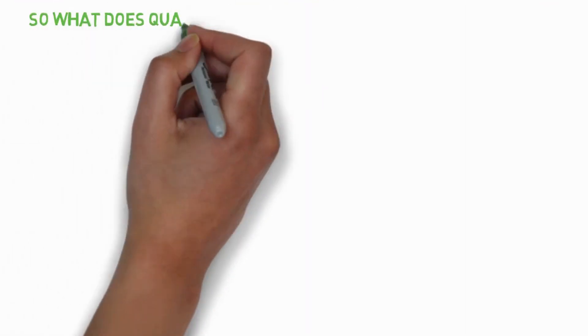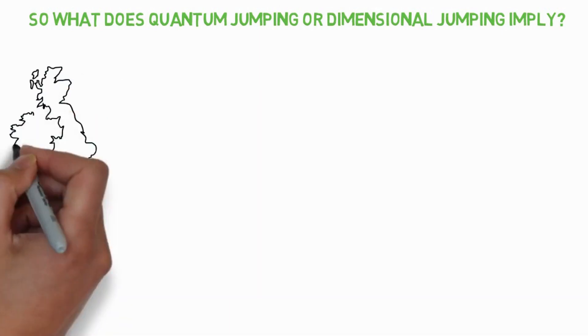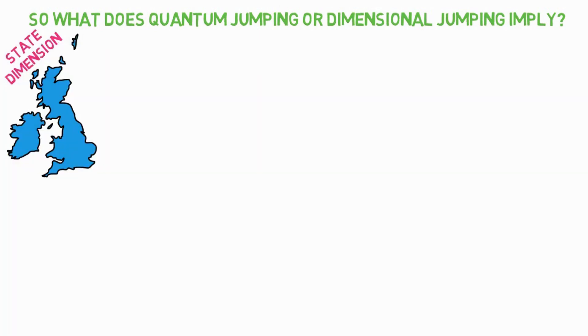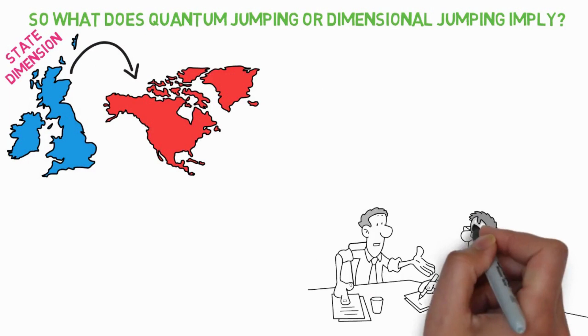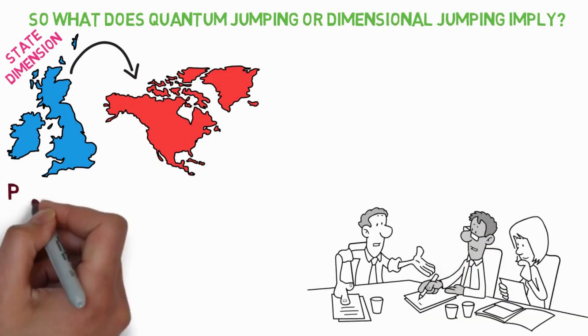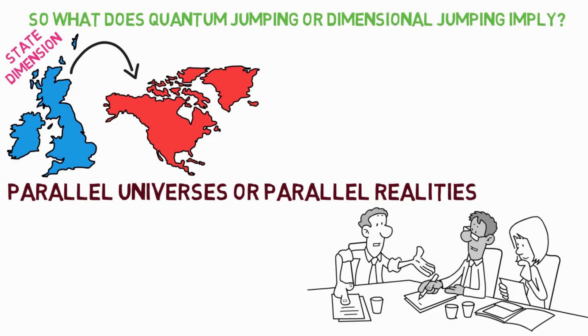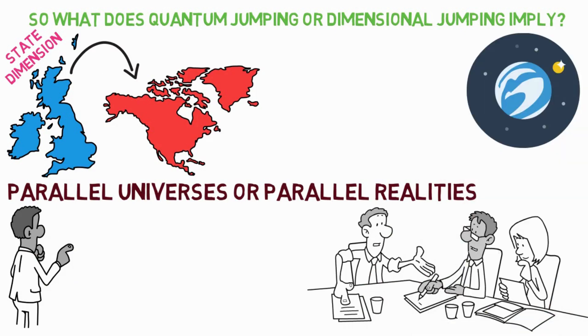So, what does Quantum Jumping or Dimensional Jumping imply? Simply, it means that you are in one state or dimension and are leaping from one dimension to the other. The scientific idea that people discuss is that there are parallel universes or parallel realities and you are in one reality and may go from one to the other.